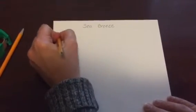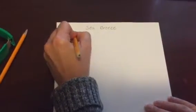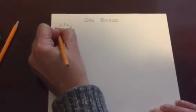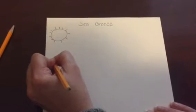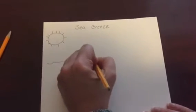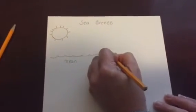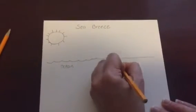During the daytime, breezes at the ocean come from the sea. I'm drawing a picture of the sun and you will do the same. You're going to draw a picture of the water and label it ocean. You're going to draw a picture of the land nearby and label it land.